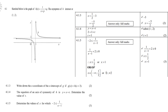For 4.1.3, write down the x-coordinate of g if g(x) = h(x + 3). The graph has shifted, so the x-coordinate is 1/2 − 3 = −5/2. For 4.1.4, the equation of an axis of symmetry of h is y = x + t; determine the value of t.